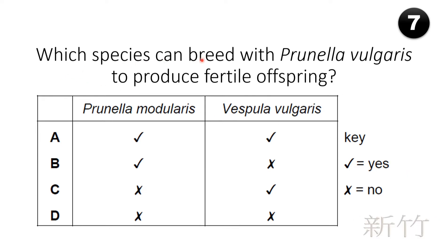Which species can breed with Prunella vulgaris to produce fertile offspring? The genus is Prunella and the species is vulgaris. Prunella modularis has the same genus but a different species. Since a species can only breed with its own species to produce fertile offspring, Prunella vulgaris can only mate with another Prunella vulgaris. So the answer is D.